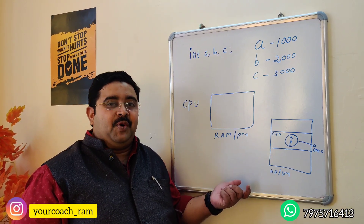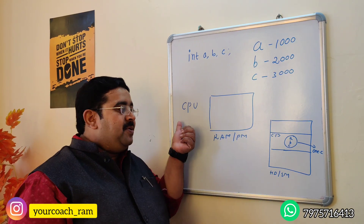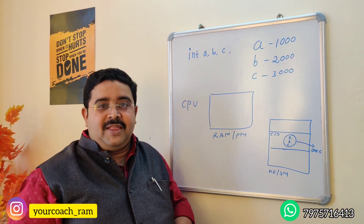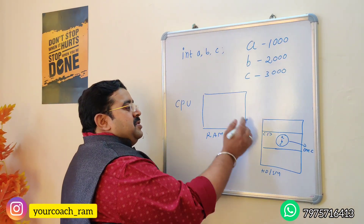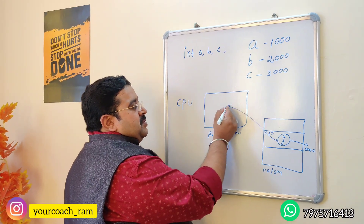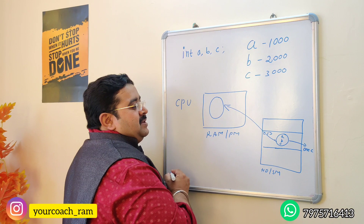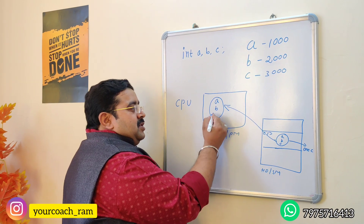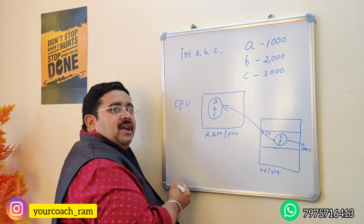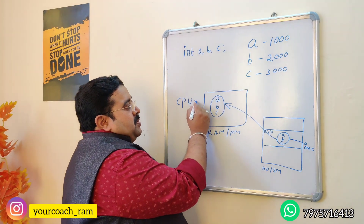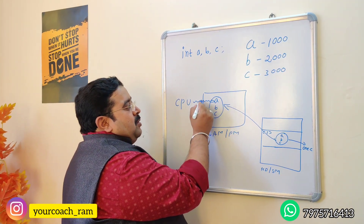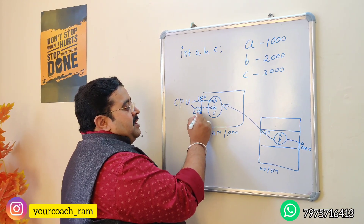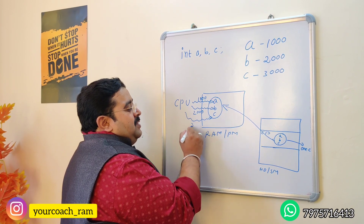If you ask the CPU whether it knows about the hard disk, it will say 'I don't know.' The CPU doesn't know that there is a hardware component called hard disk. So when you want to run the program, it must come from hard disk to RAM. Once the program comes to RAM, we call it a process. Now CPU must go to RAM to access A 1000 times, B 2000 times, and C 3000 times.